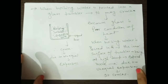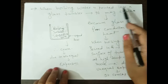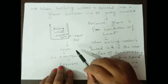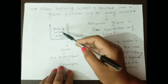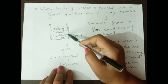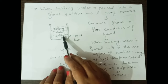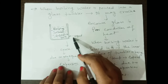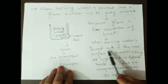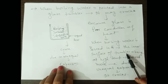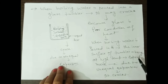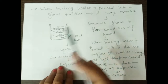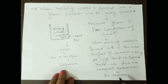Another example: when boiling water is poured into a glass tumbler, the tumbler may crack. This is because the inner wall of the tumbler becomes hot first and expands more compared to the outer wall. Due to this unequal expansion between the inner and outer walls, the glass cracks.